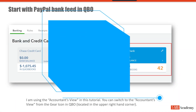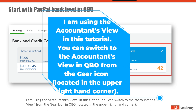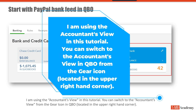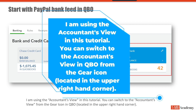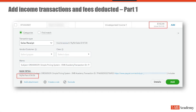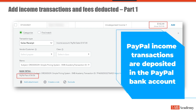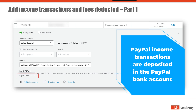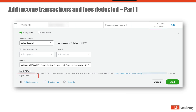Let's go through how this works. I am using the accountant's view in this tutorial. You can switch to the accountant's view in QuickBooks from the gear icon — go to the upper right-hand corner, look for the gear icon, click on that icon, and then click to switch to the accountant's view. From the banking transactions in QuickBooks, you will start with the PayPal bank account. You will see all of the transactions flowing into PayPal being deposited into the PayPal bank account. Here's an example of one transaction — just click on that transaction and it will expand the window to show you additional information.